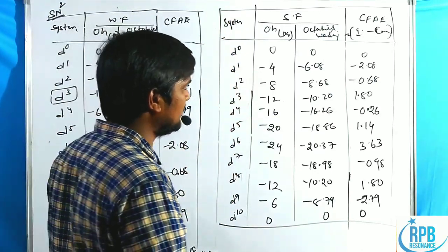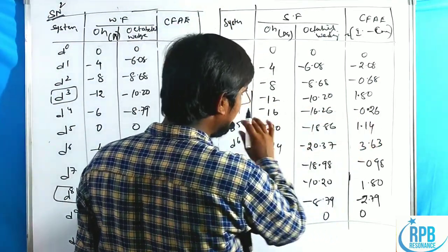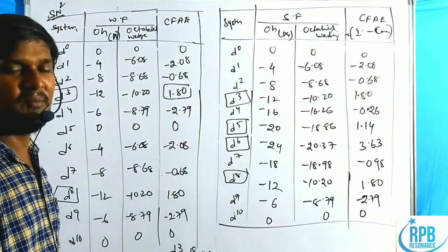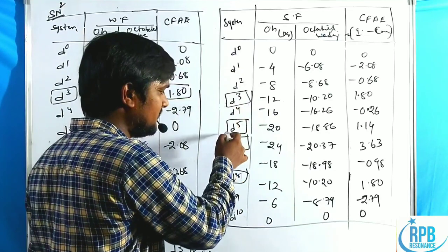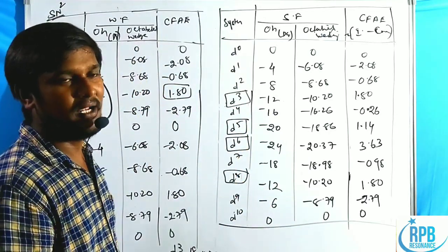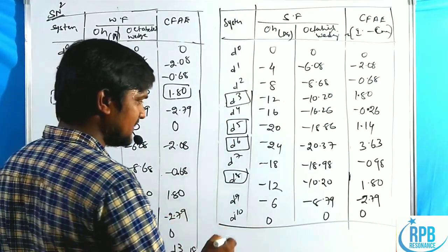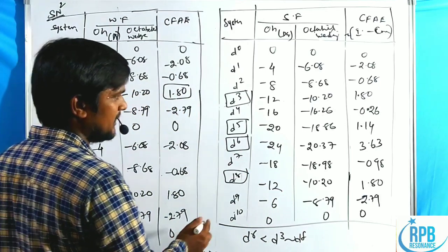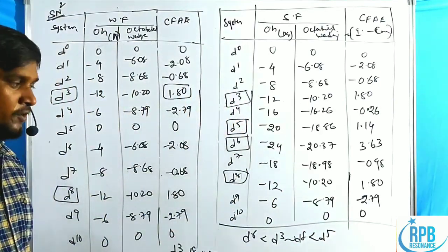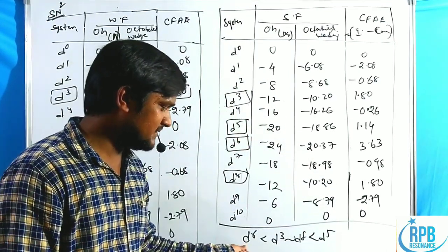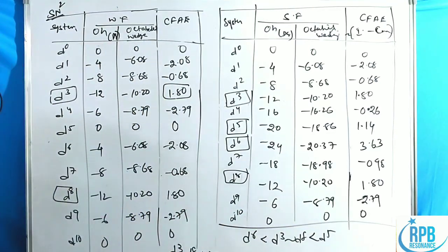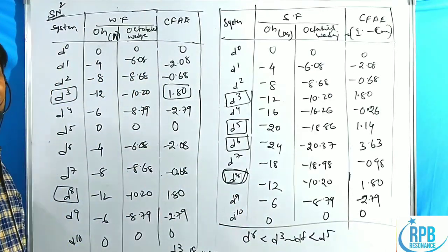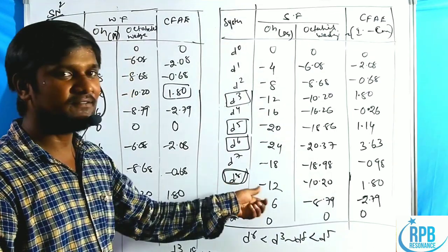In case of strong field ligands with SN2, the positive values are D3, D5, D6, and D8 — D4 and D7 are not positive. So D3, D5, D6, D8 are inert complexes; remaining all are labile. Among these four inert configurations, the lability order: D6 has the highest value, then D3 and D8 have equal energy, then D5. Crystal field activation theory clearly explains that D8 is an inert complex, which cannot be explained by valence bond theory.